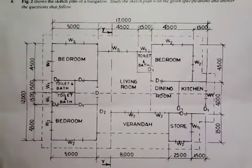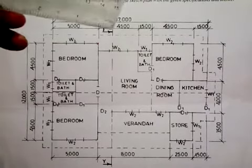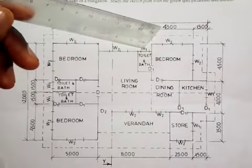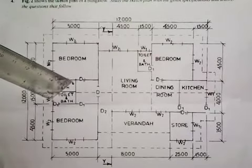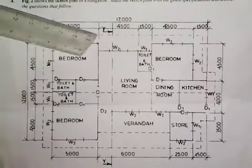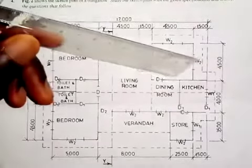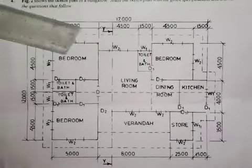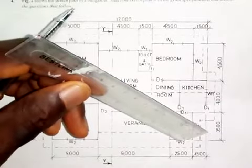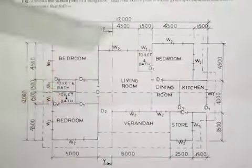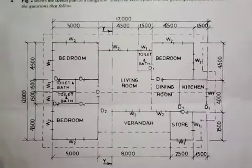Looking at what we have here, we have two types of windows: W1 and W2. W1 appears in the toilet and bath areas, in the kitchen, and in the store. W2 appears in other locations. That is how all the windows are labeled.